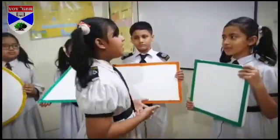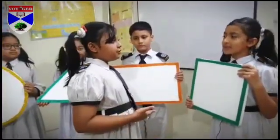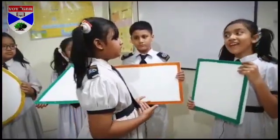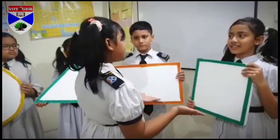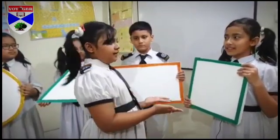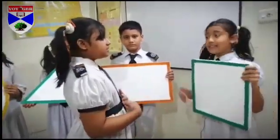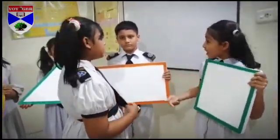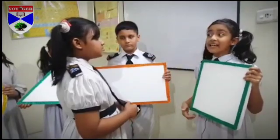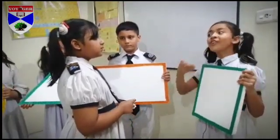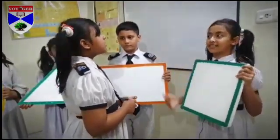Hey Biba, how do you do? I am great. What's it? Do you have any idea? Yes, it's a square. It has four equal sides and four corners.